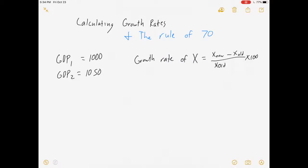we would say your new GDP, that's GDP two, minus your old GDP, divided by your old GDP, times 100. That's equal to $1,050 minus $1,000 divided by $1,000 times 100, is equal to 5, which we interpret as being 5%.